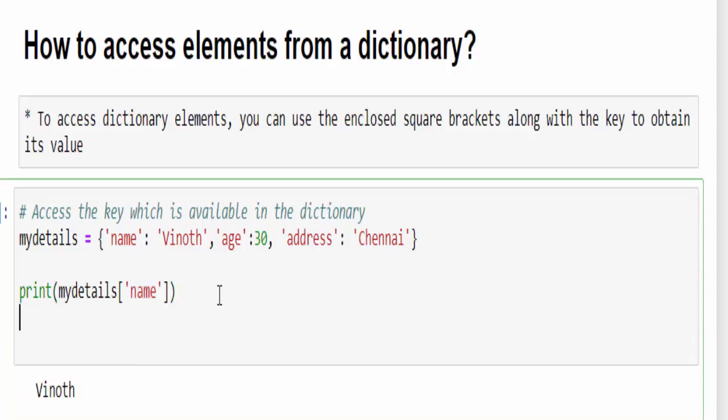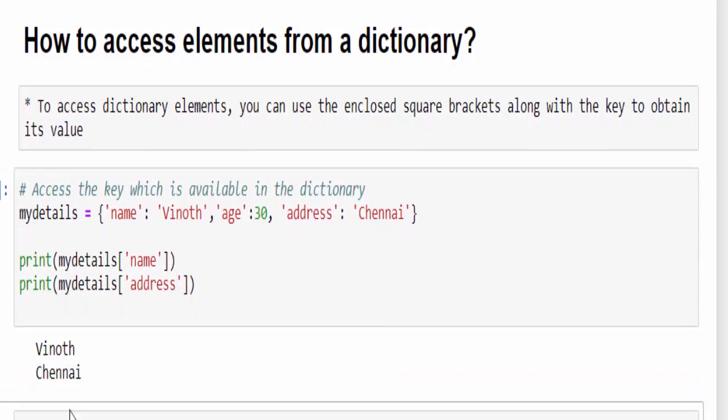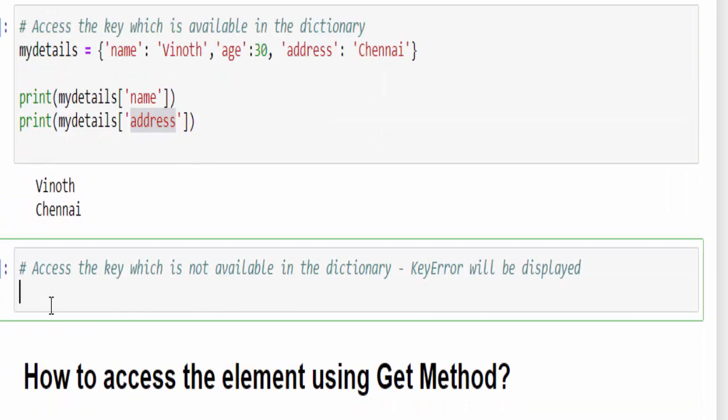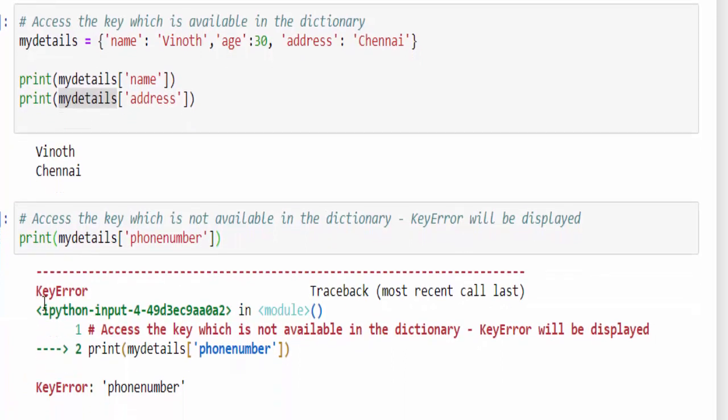Similarly, one more example. Print the variable name in square brackets, within quotes mention the key. Just run it, and for address it is Chennai. In case if we try to access a key which is not available in the dictionary, then what will happen? Print my details, for example I am checking the phone number. Just run it. You got the key error. It means if the value is not available in the dictionary variable, then we will get the key error.